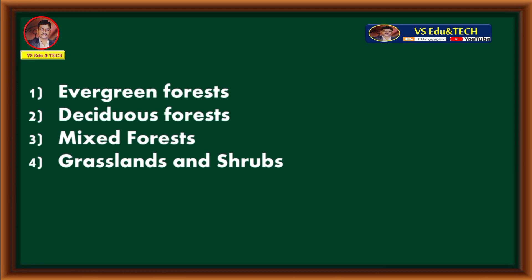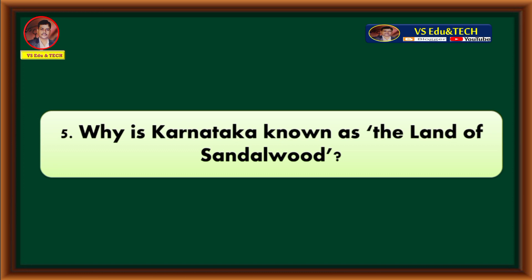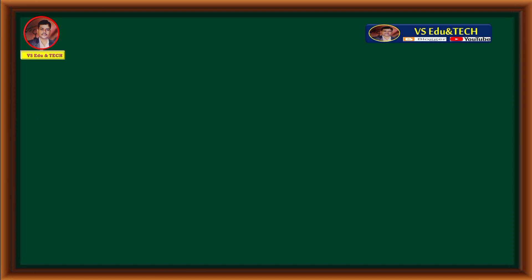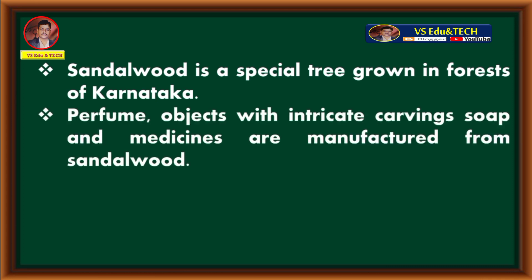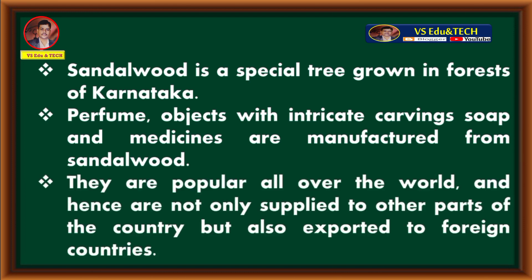Question number five: why is Karnataka known as the land of Sandalwood? Sandalwood is a special tree grown in the forests of Karnataka. Perfume, objects with intricate carvings, soap and medicines are manufactured from Sandalwood. They are popular all over the world and are not only supplied to other parts of the country but also exported to foreign countries. Due to all these reasons, Karnataka is known as the land of Sandalwood.